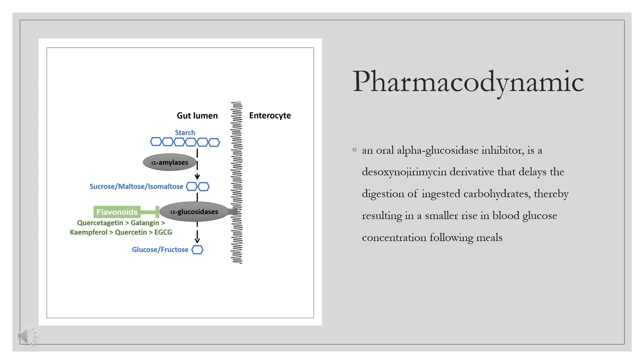As a consequence of plasma glucose reduction, miglitol reduces levels of glycosylated hemoglobin in patients with type 2 non-insulin-dependent diabetes mellitus. Systemic non-enzymatic protein glycosylation, as reflected by levels of glycosylated hemoglobin, is a function of average blood glucose concentration over time.